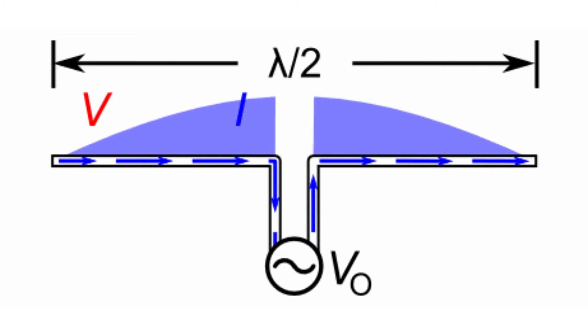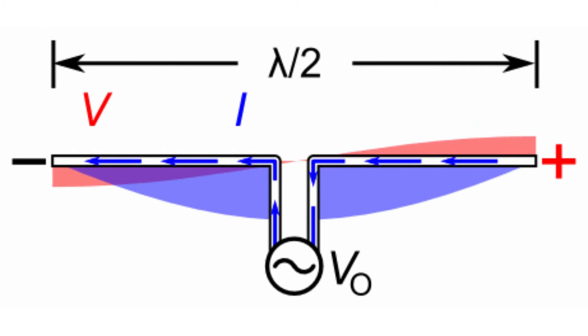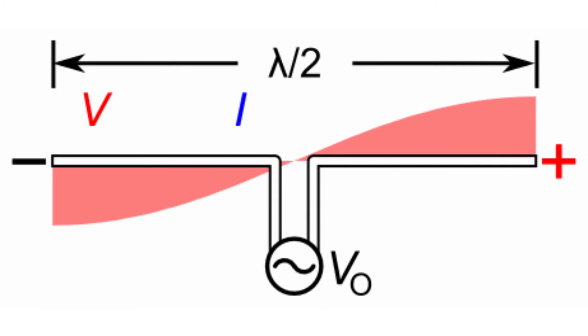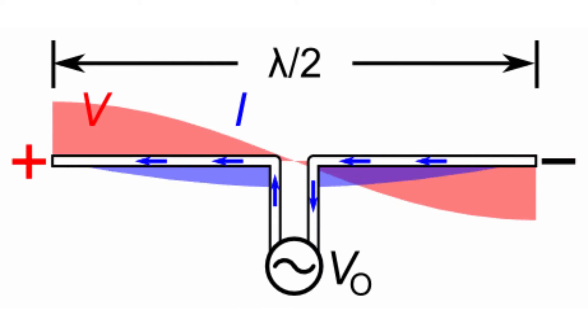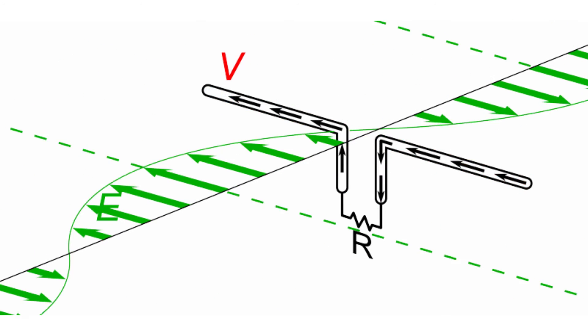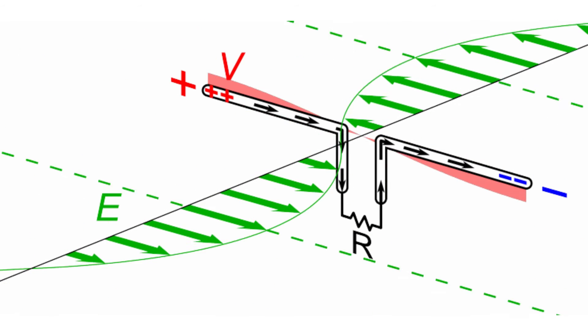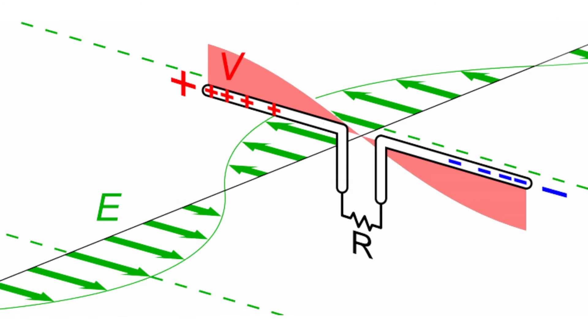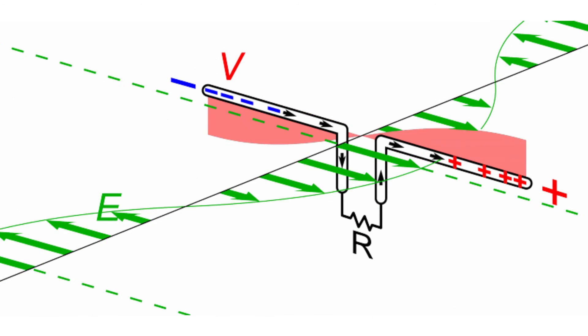The diagram shows a half-wave dipole driven at its resonant frequency. This theory also holds true for receive — you'll receive your best reception if the antenna is resonant.